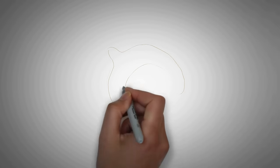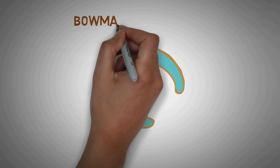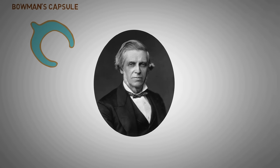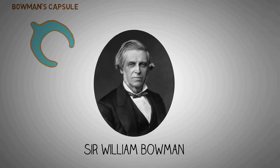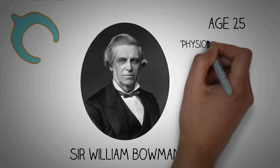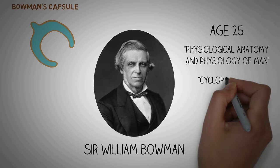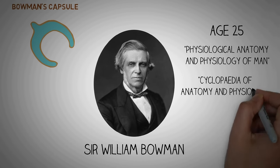At one end, the tube is closed, folded, and expanded into a cup-like structure which is known as the Bowman's capsule. The Bowman's capsule was discovered by Sir William Bowman at the age of 25. He was an English surgeon and histologist who is also credited with publications of two historical books: The Physiological Anatomy and Physiology of Man and Cyclopaedia of Anatomy and Physiology.